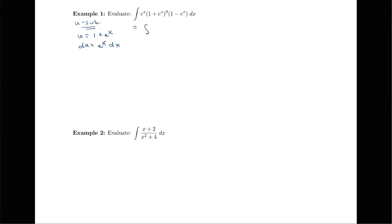So if we rewrite this in terms of u, I'm going to have u to the 9th, and my e to the x dx becomes my du. Then I have this 1 minus e to the x left over, so I'm going to need to get that 1 minus e to the x in terms of u as well.